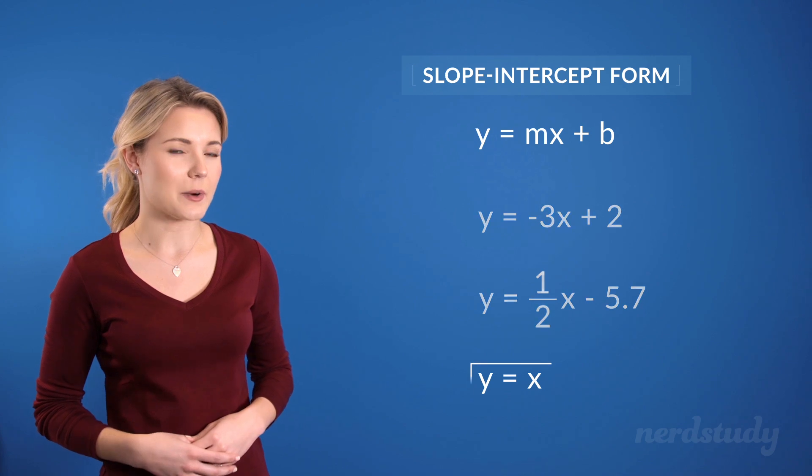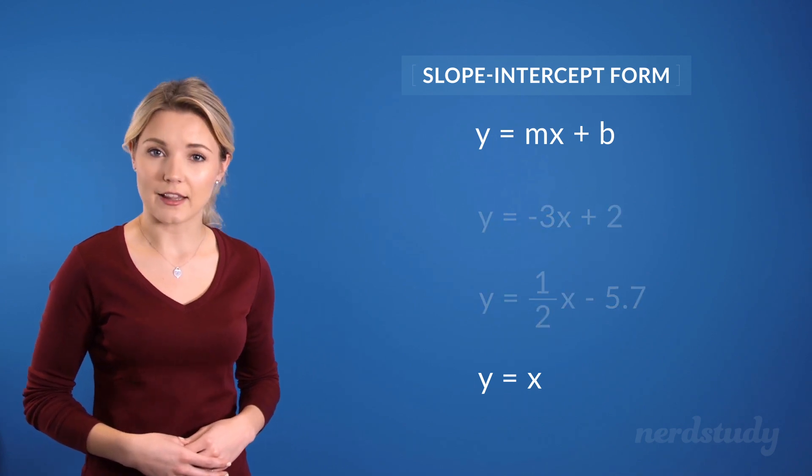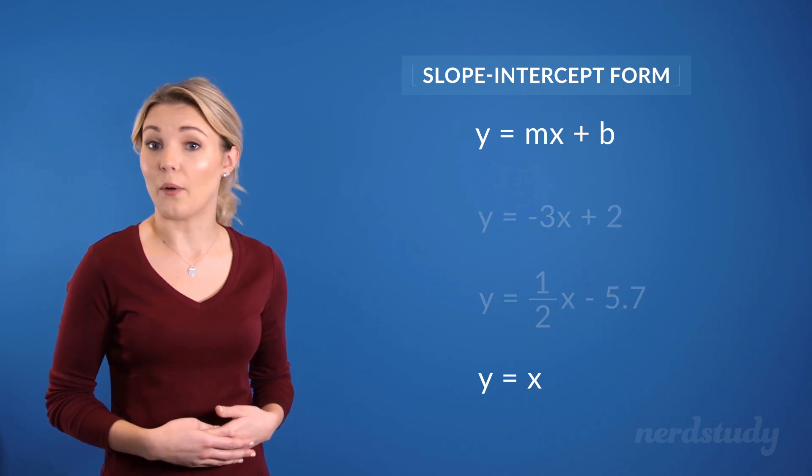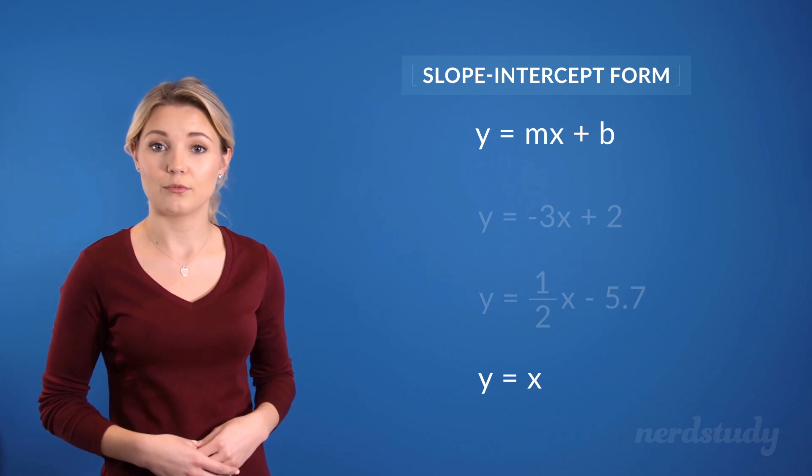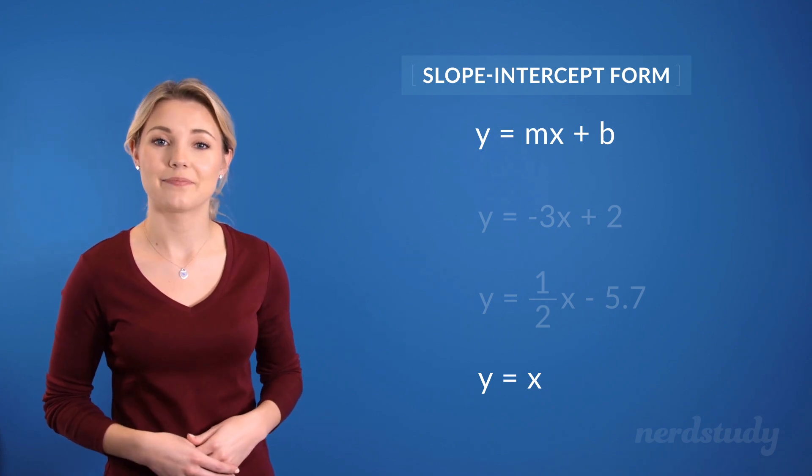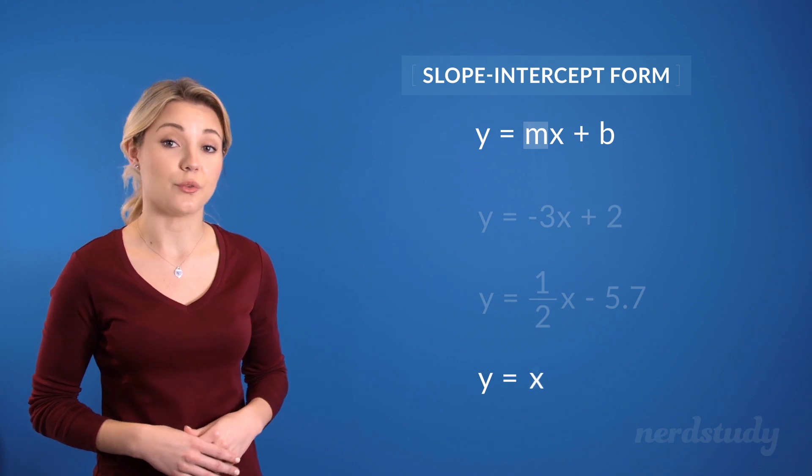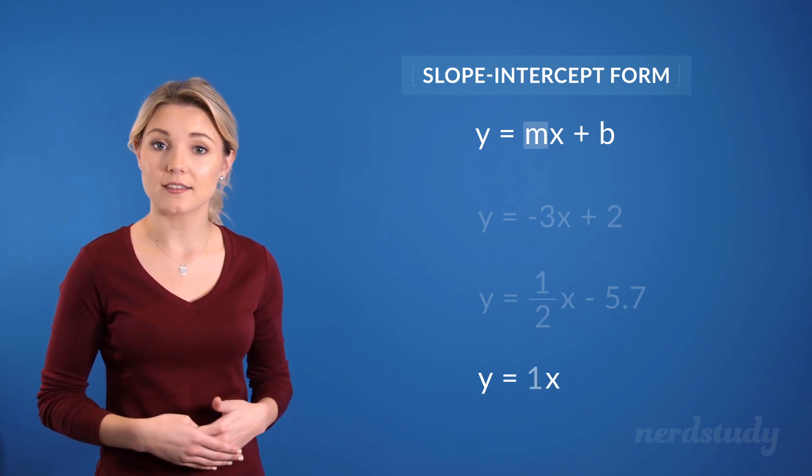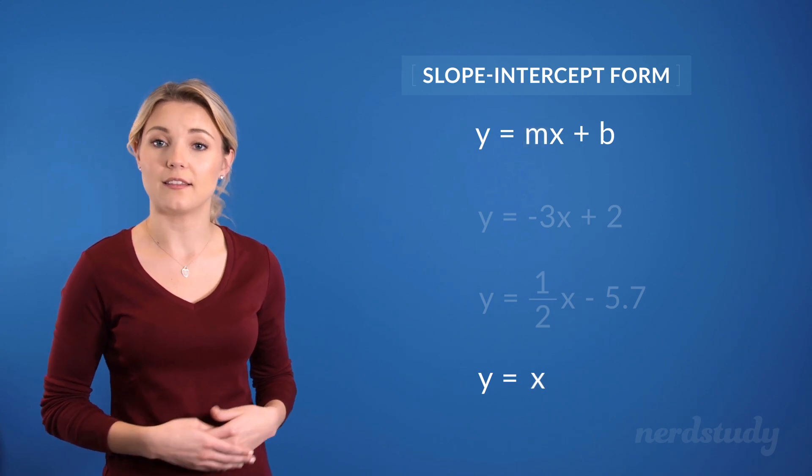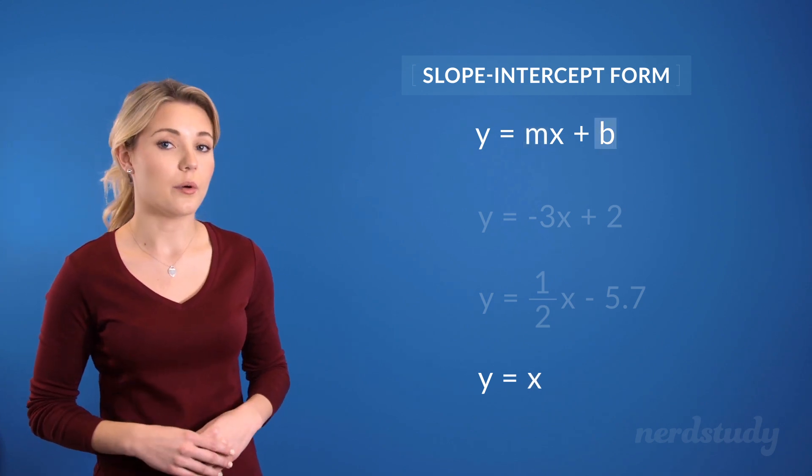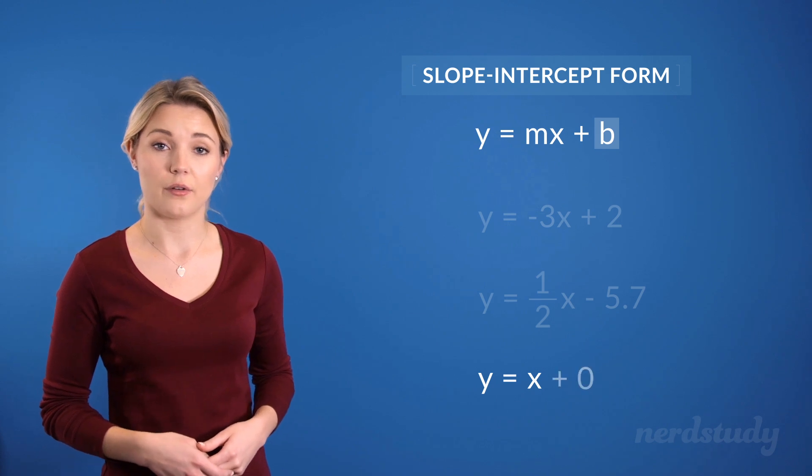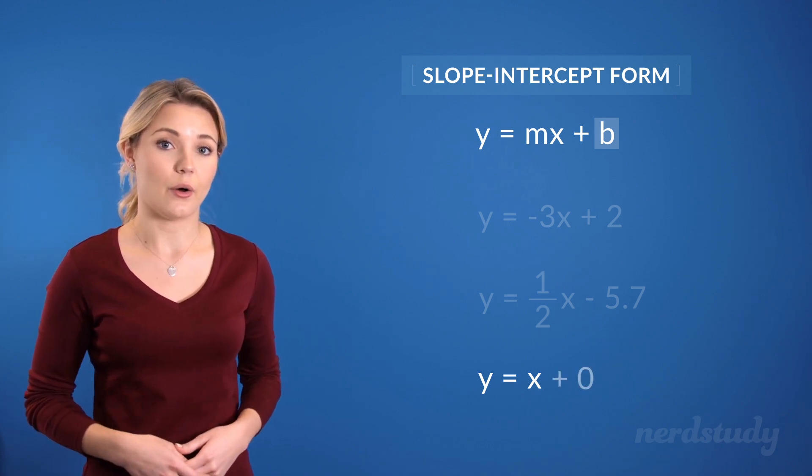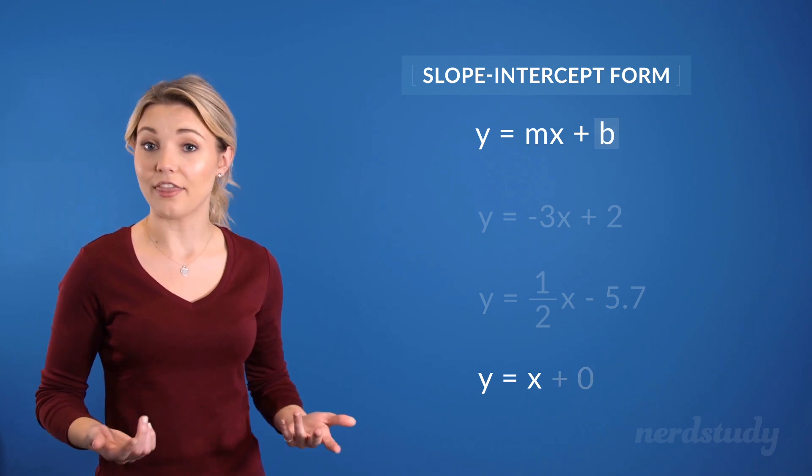Now, what about this last one here? At first glance, it might seem as if there's no m and b values. Well, there is. The m here is actually 1. And since 1 times x is just x, this is why we can represent it like so. Also, the b here would be 0, because adding by 0 would be the same thing as writing nothing.